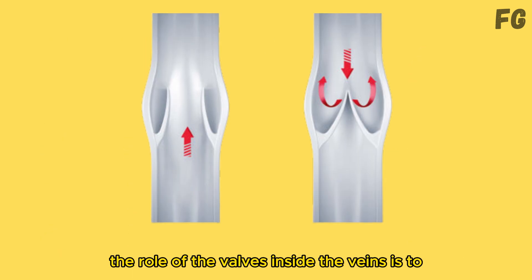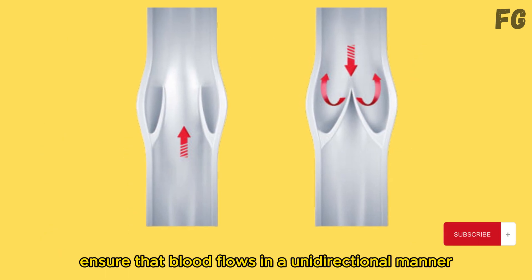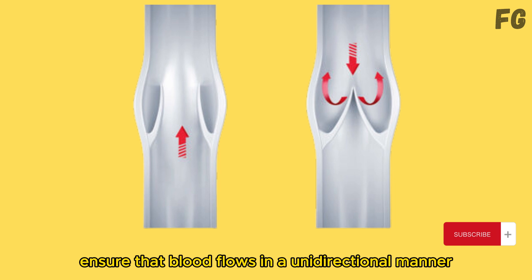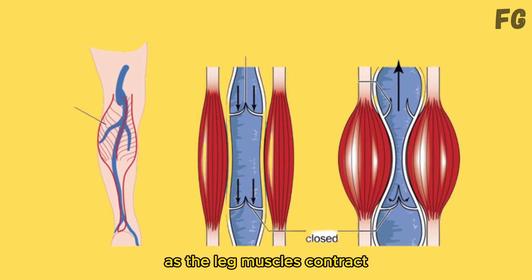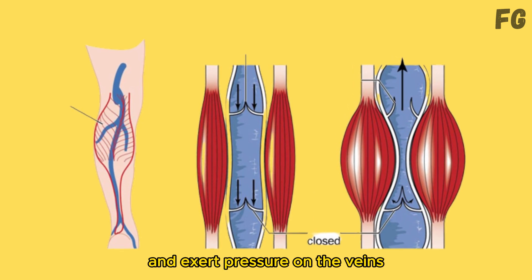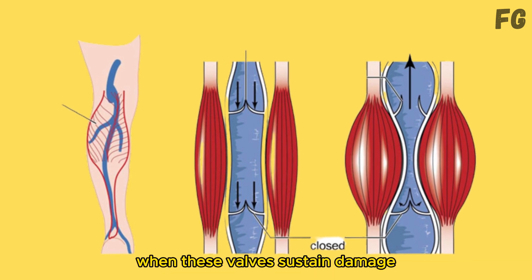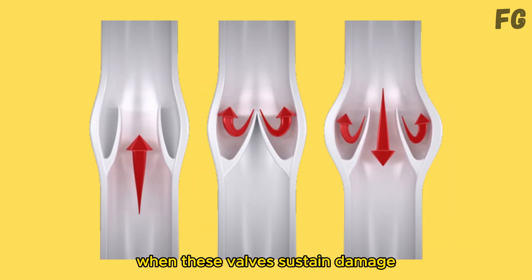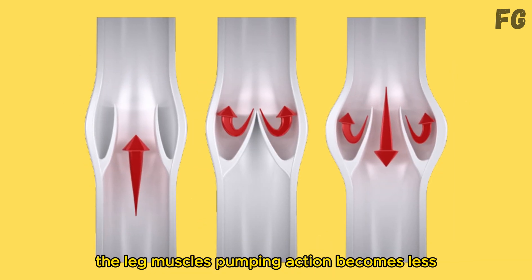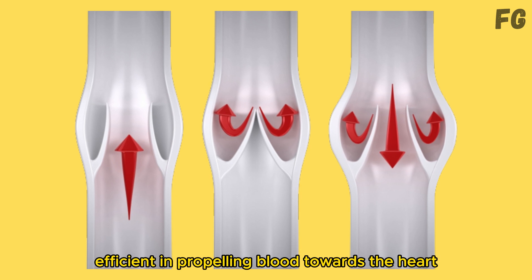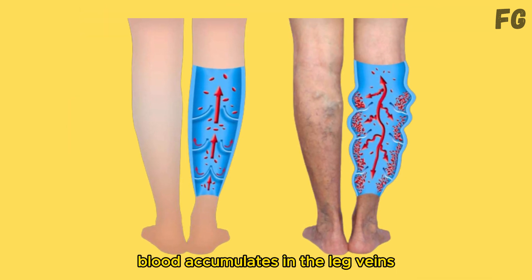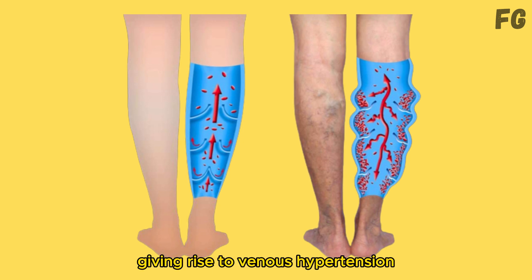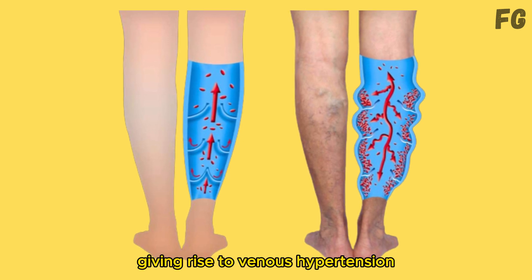The role of the valves inside the veins is to ensure that blood flows in a unidirectional manner as the leg muscles contract and exert pressure on the veins. When these valves sustain damage, the leg muscles' pumping action becomes less efficient in propelling blood towards the heart. Consequently, blood accumulates in the leg veins, giving rise to venous hypertension.